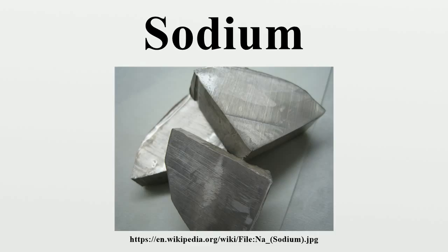All other isotopes have a half-life of less than one minute. Two nuclear isomers have been discovered, the longer-lived one being 24mNa with a half-life of around 20.2 microseconds. Acute neutron radiation, such as from a nuclear criticality accident, converts some of the stable 23Na in human blood to 24Na. By measuring the concentration of 24Na in relation to 23Na, the neutron radiation dosage of the victim can be calculated.